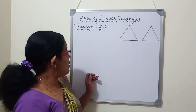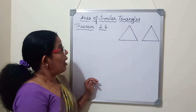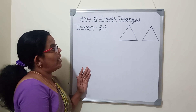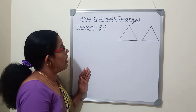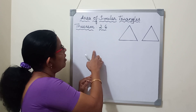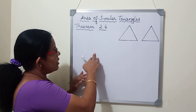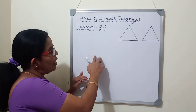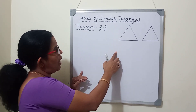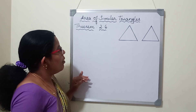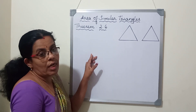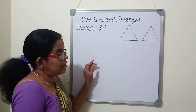So what is the relation between areas and the sides of similar triangles? Starting with the theorem: the theorem states that the ratio of the areas of two triangles will be equal to the square of the ratio of their corresponding sides.